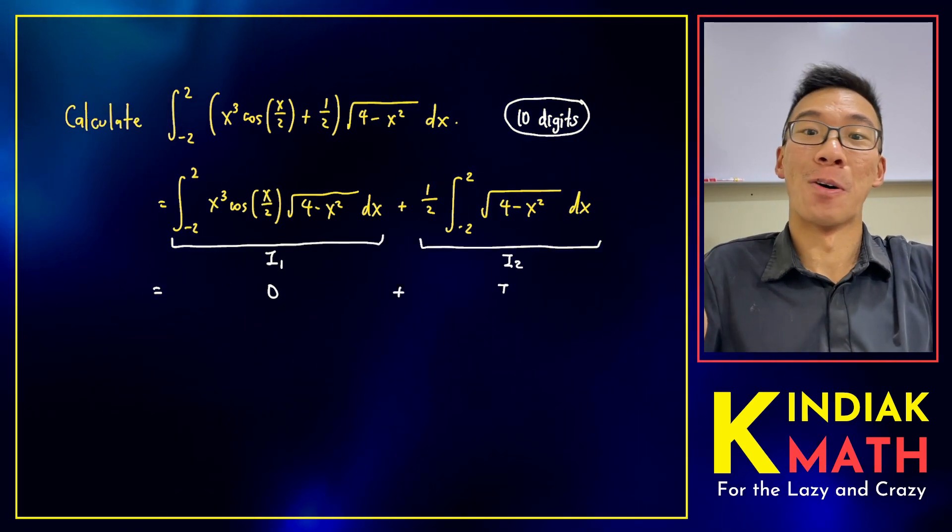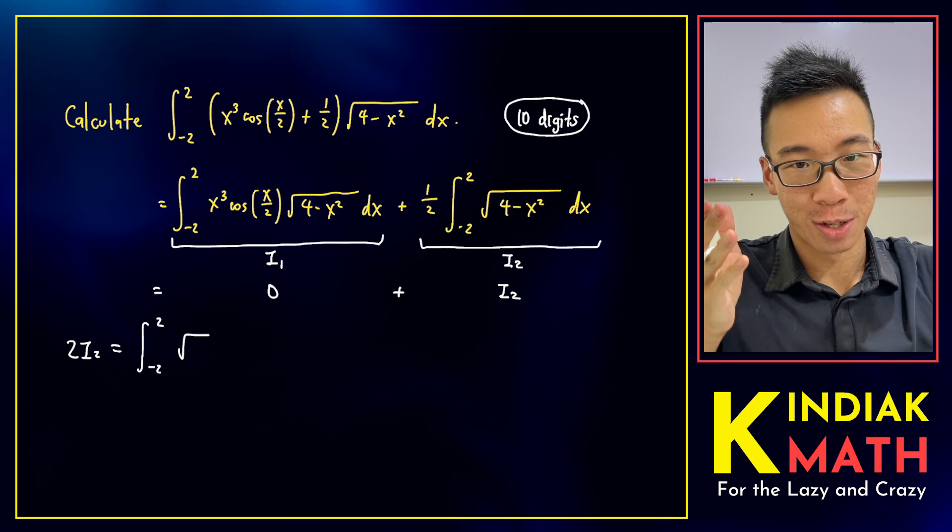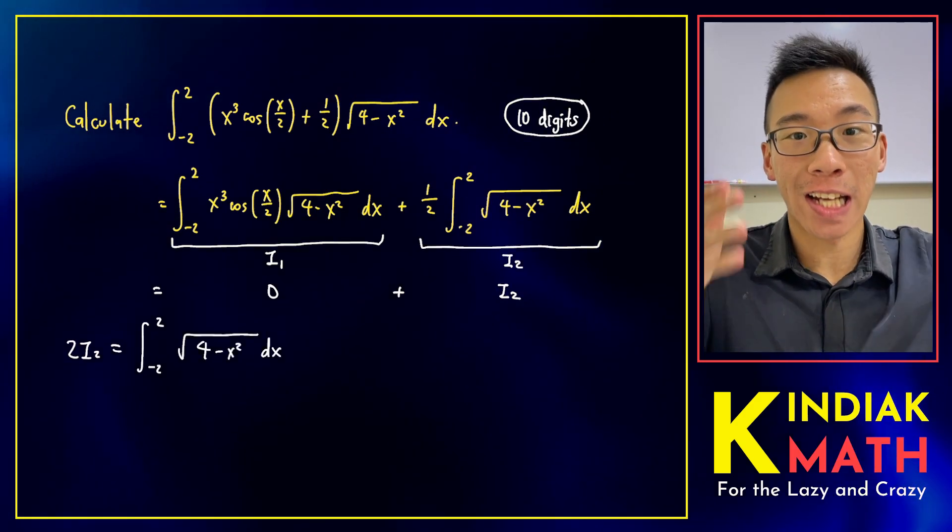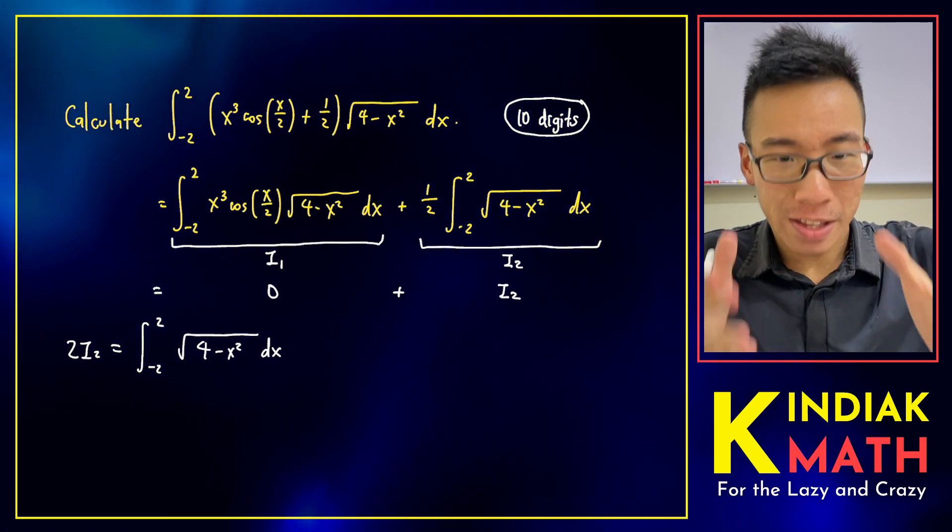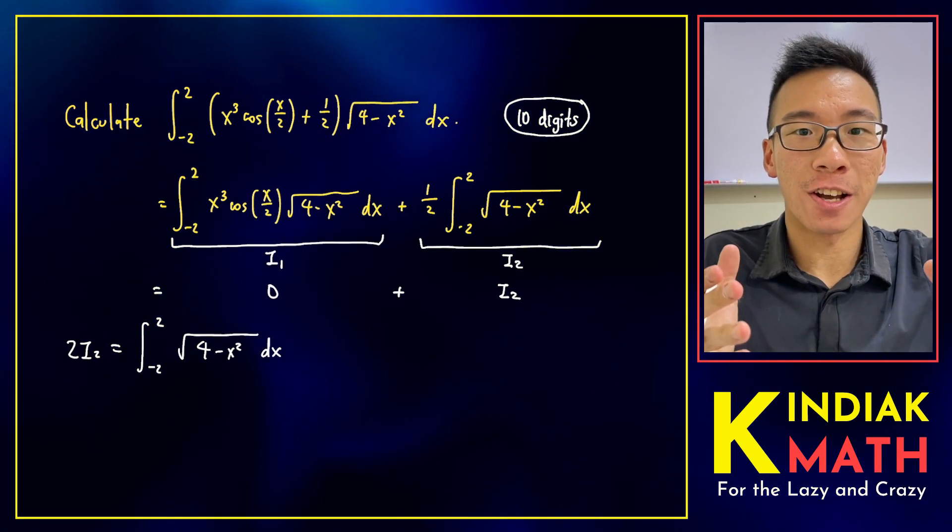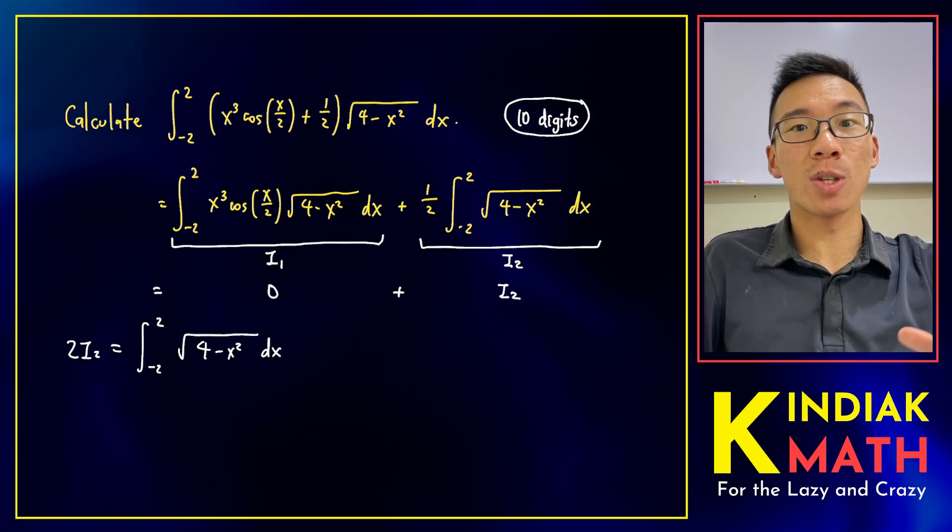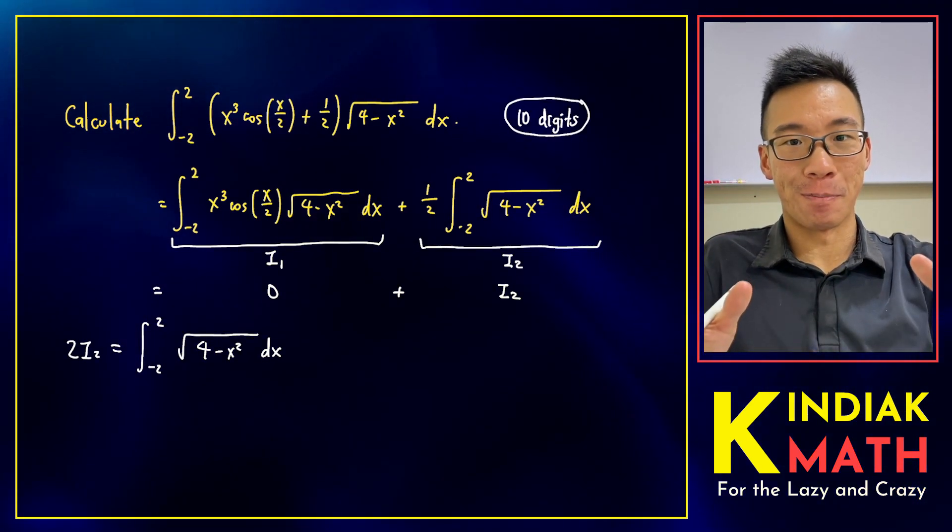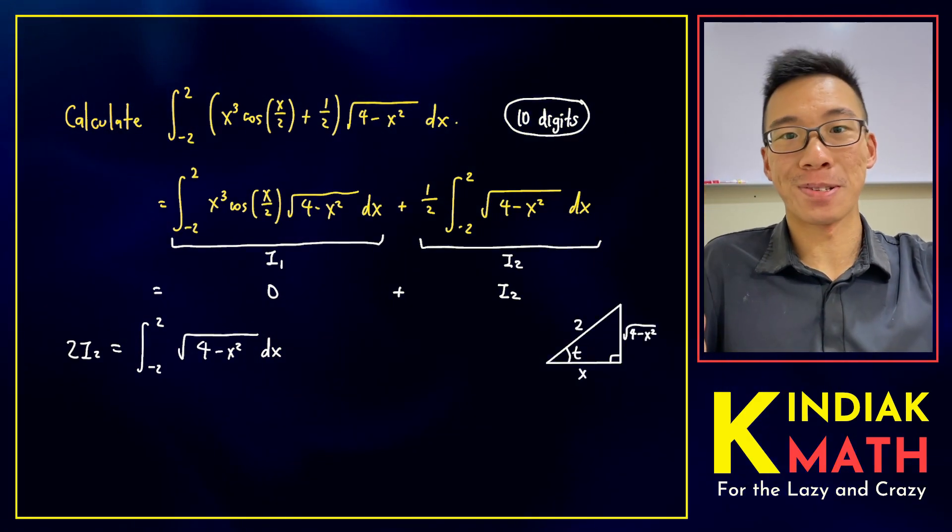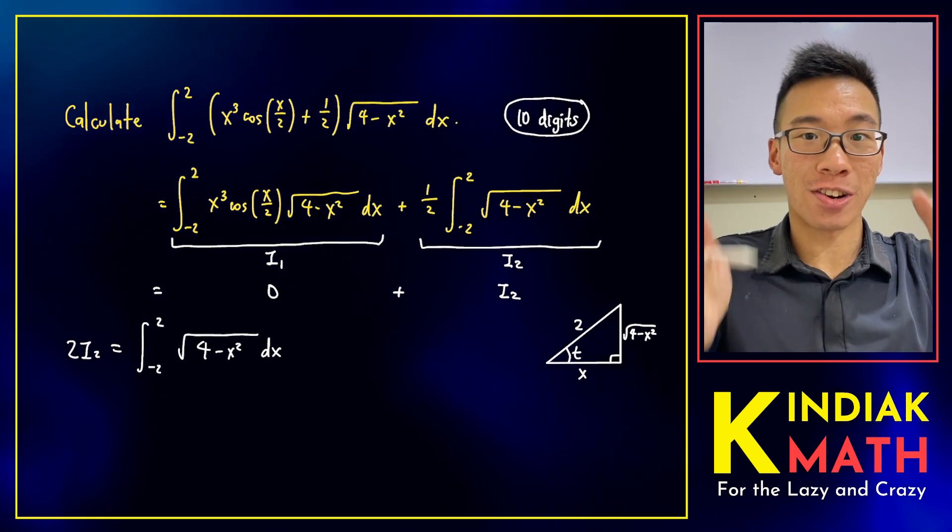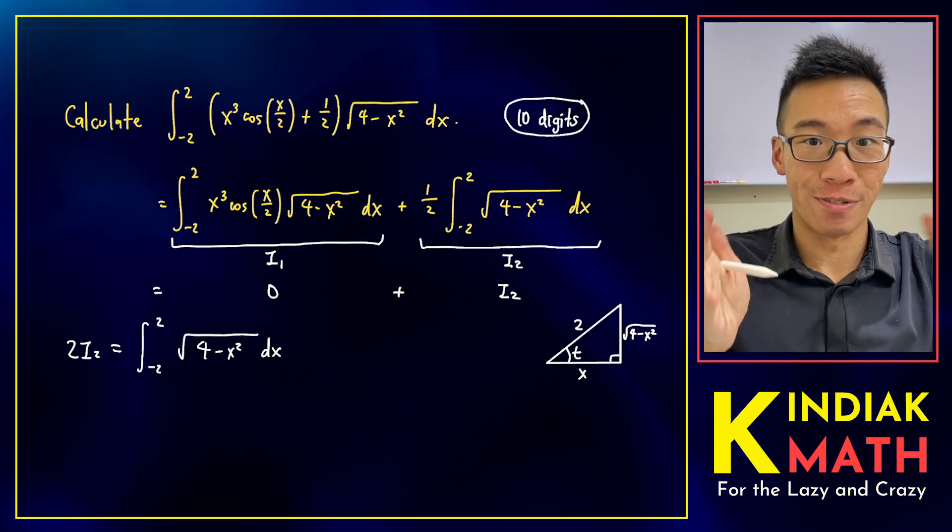All that remains is for us to calculate i2. How can we go about integrating i2? We make the careful observation that this square root 4 minus x squared looks a lot like Pythagoras' theorem. In fact, we can draw a right-angled triangle as follows. From this right-angled triangle, we can make a few really interesting observations.